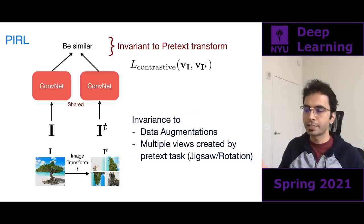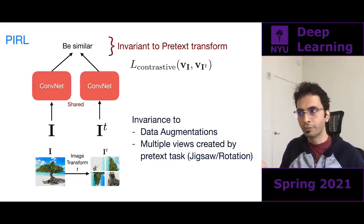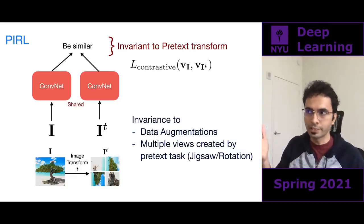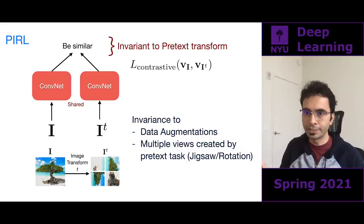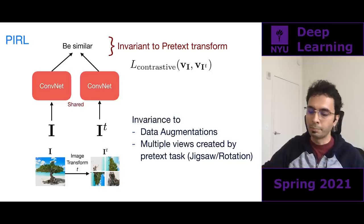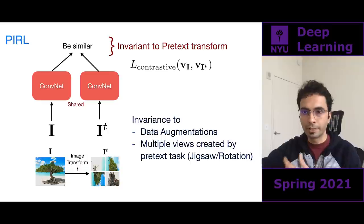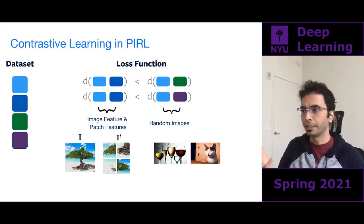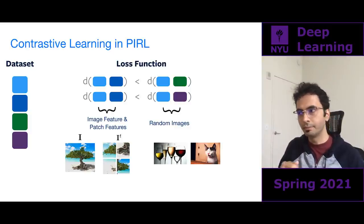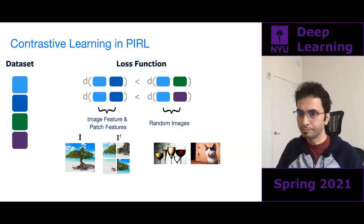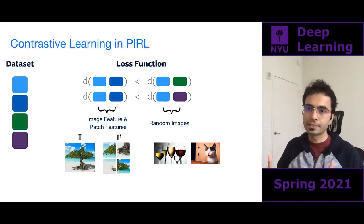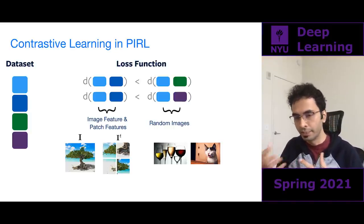For PIRL, we feed image i and a transformed version of image i to the network, then add a contrastive loss on top to encourage similarity. This image transform can be any pretext task — jigsaw or rotation. By applying this data augmentation, we learn a network that is invariant to the pretext task. Rather than thinking of pretext tasks as something to predict, you think of them as something to be invariant to.